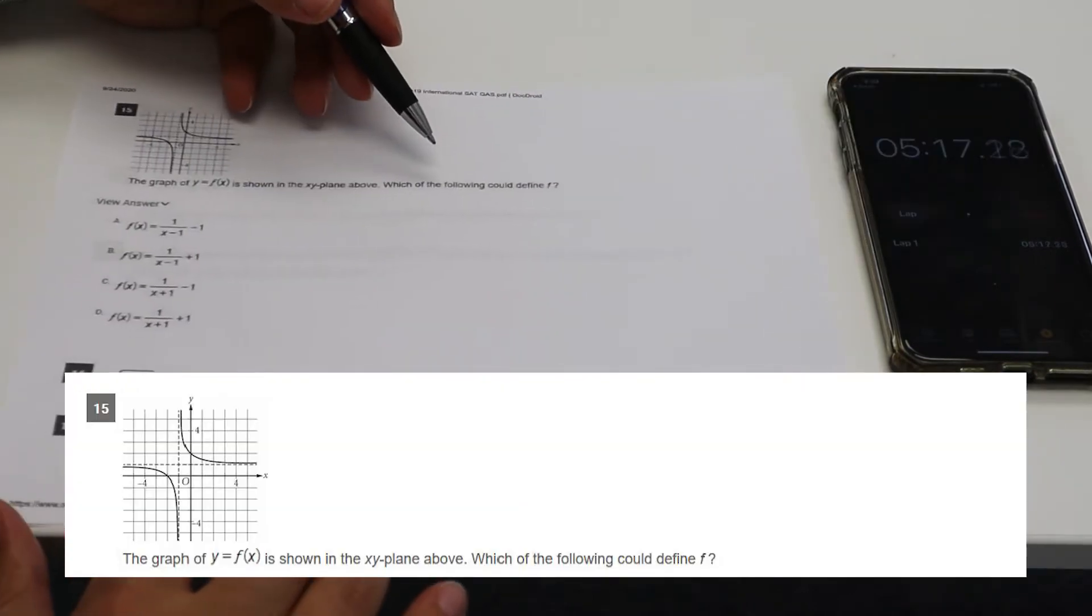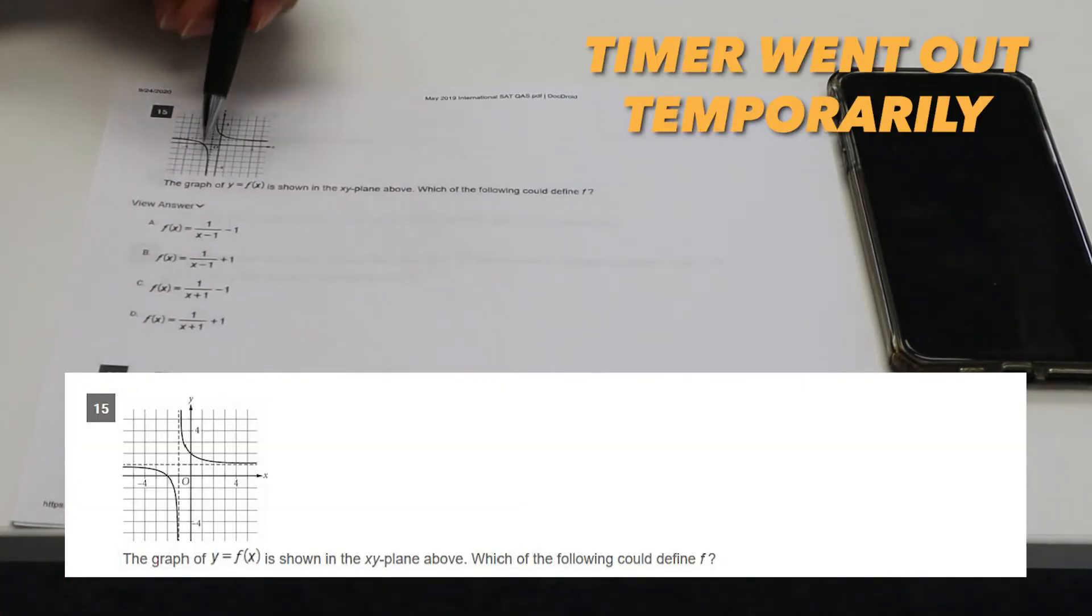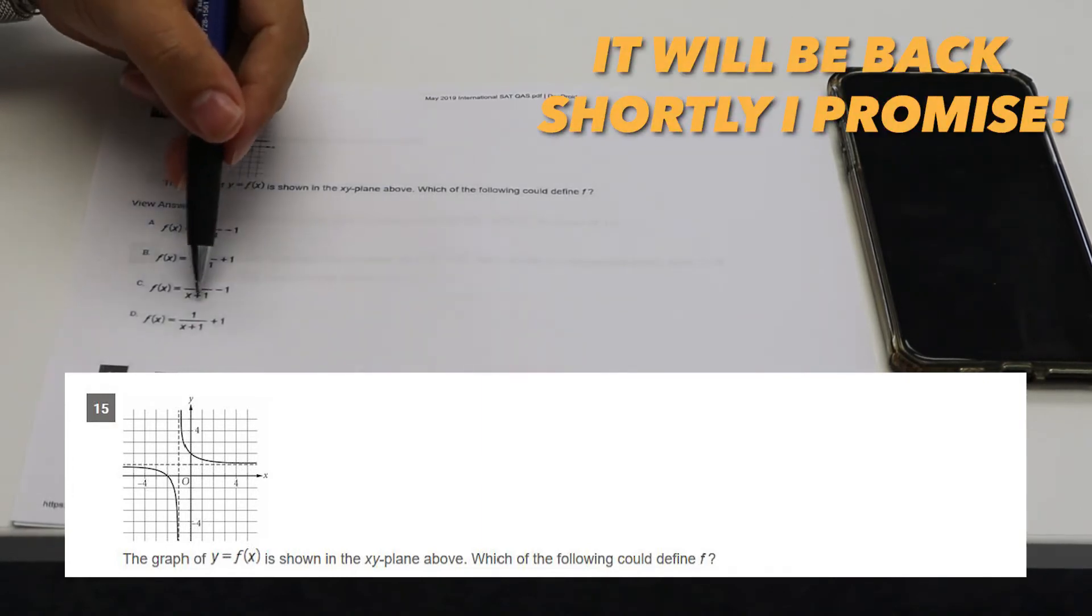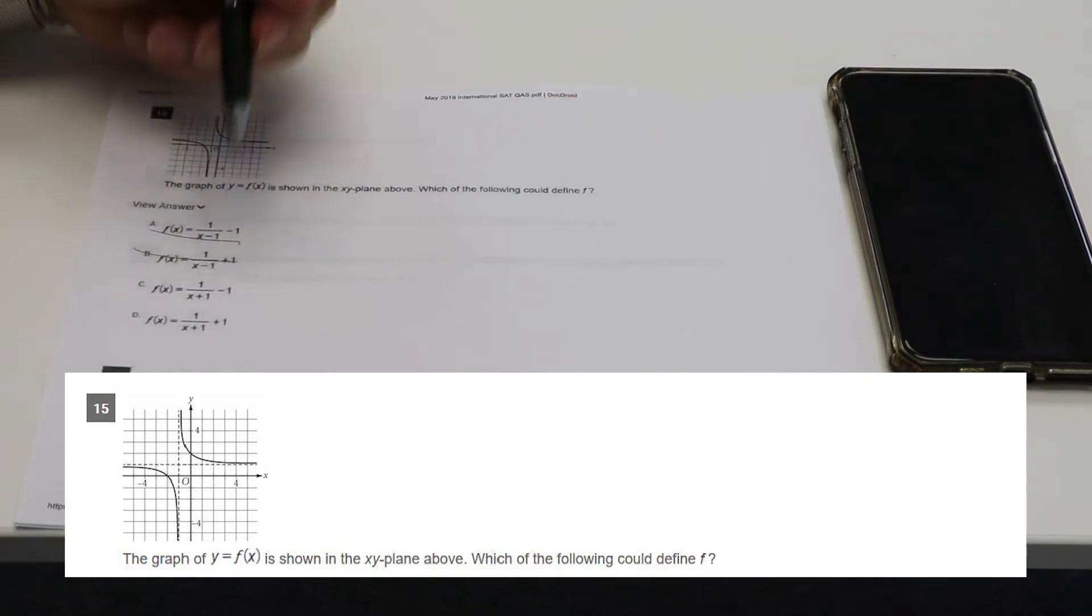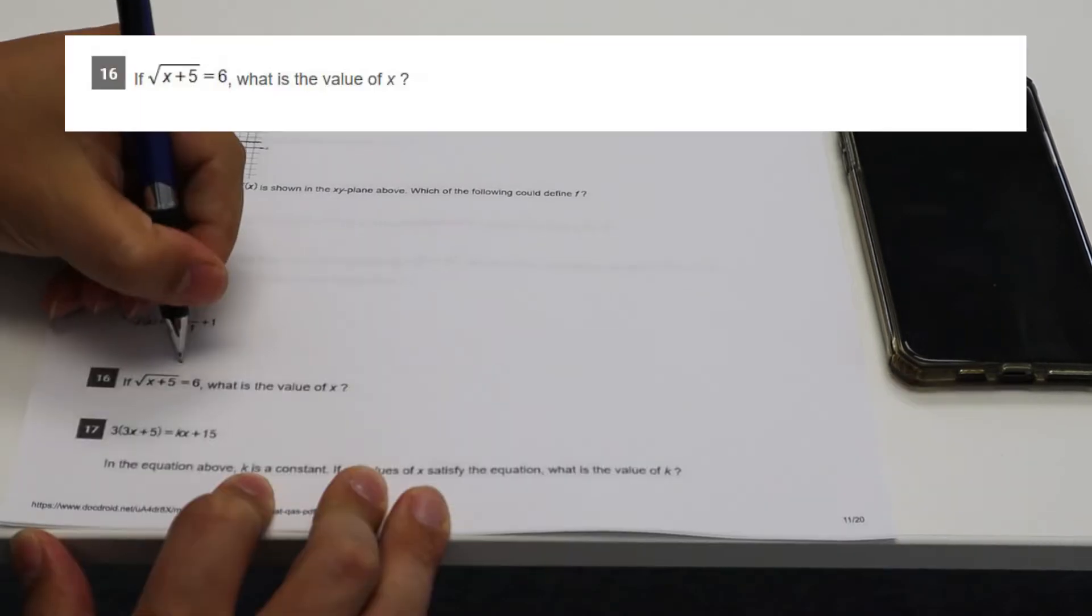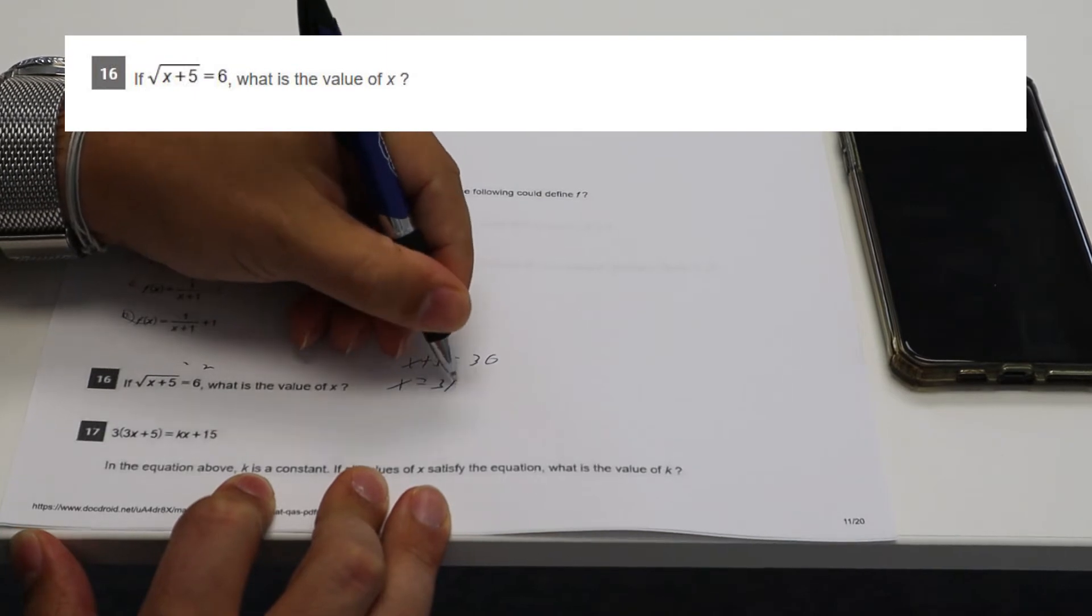What defines F. So we have an asymptote at X of negative one. So X of negative one should result in undefined. So it's going to be one of these two and then the other asymptote as it approaches positive one. So it's going to be D. Square both sides, X plus five equals 36, X equals 31.